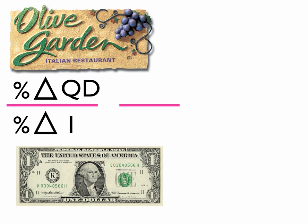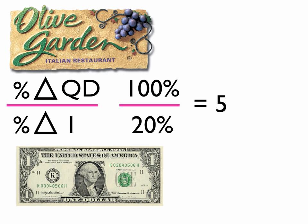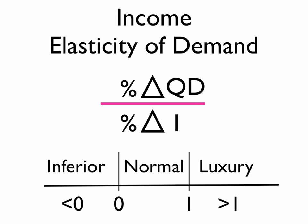Let's look at a third example. If my income increases again by 20% and my quantity demanded of Olive Garden increases by 100% — I'm doubling my quantity demanded of Olive Garden — that value would be 5. That would be greater than 1, so that good would be considered a luxury good.